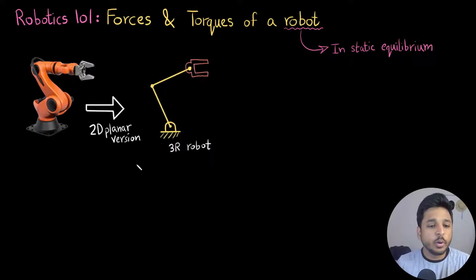So I have just converted this robot into a planar version of it. So it becomes a 3R robot which has got three revolute joints. So three motors attached here, here and here.